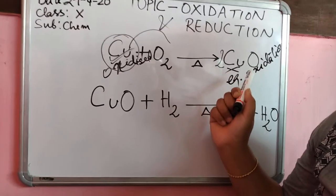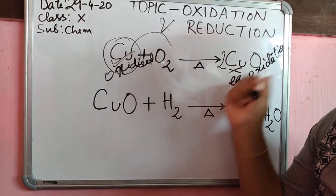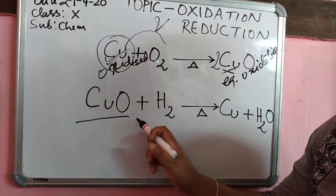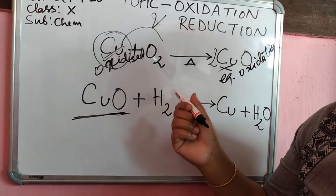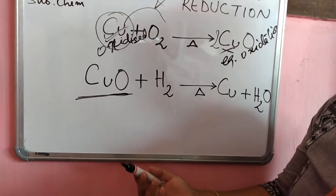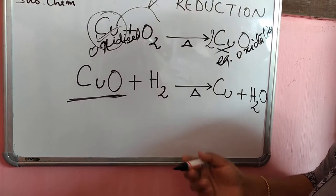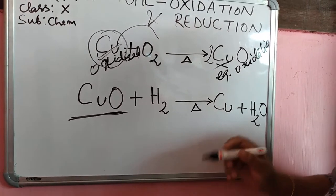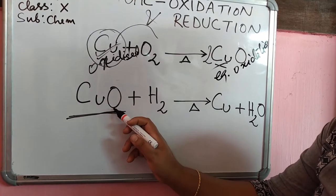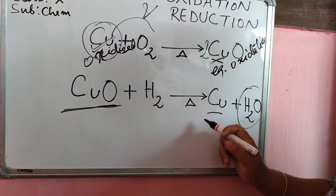Now, take that same copper oxide — the black substance — and pass heated hydrogen gas over it. It will again return to the earlier reddish brown color of copper. The black coating will disappear. When you allow copper oxide to react with hydrogen gas, the copper oxide converts back to copper.